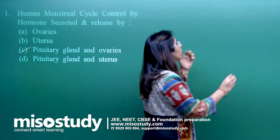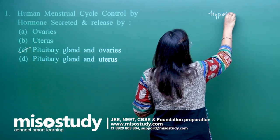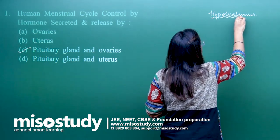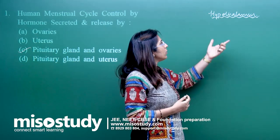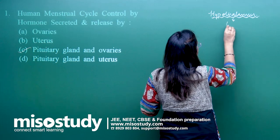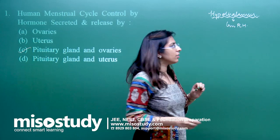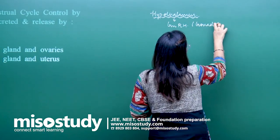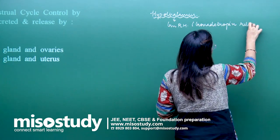We all know about the hypothalamus. The hypothalamus is considered the master of the master gland. Everything happening in our body is controlled by the hypothalamus. It secretes one hormone which we call GNRH — gonadotropin releasing hormone.